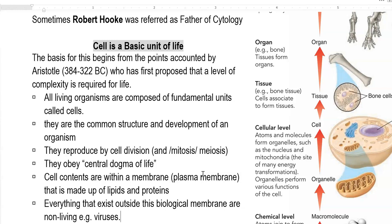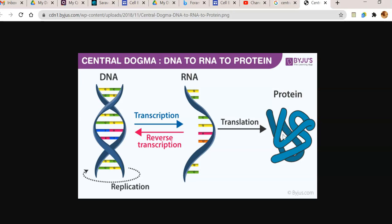They all obey the central dogma of life. The central dogma refers to how information moves from DNA to RNA and then to proteins. DNA is also replicated into DNA through replication. DNA moves into RNA through the process of transcription. Sometimes, RNA can also be converted back into DNA through the action of reverse transcriptase enzyme — this process is called reverse transcription.